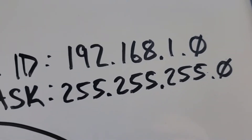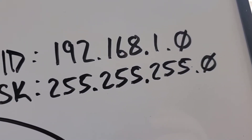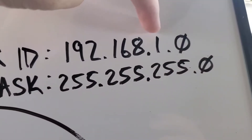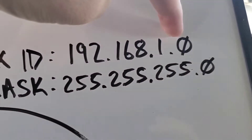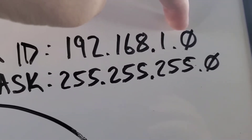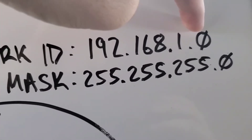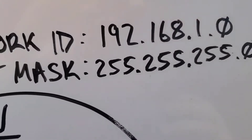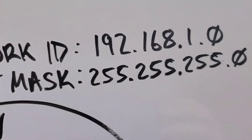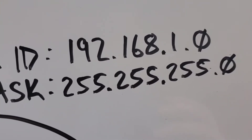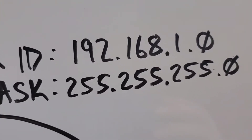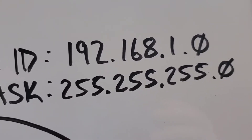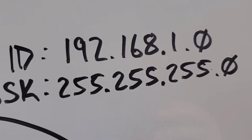Another IP that's not usable is the very highest IP, which would be 192.168.1.255. That is also not usable because it's reserved for broadcast — meaning if you send something to the broadcast address, it sends it to every IP on the network. So 192.168.1.0 and 192.168.1.255 are both not usable.